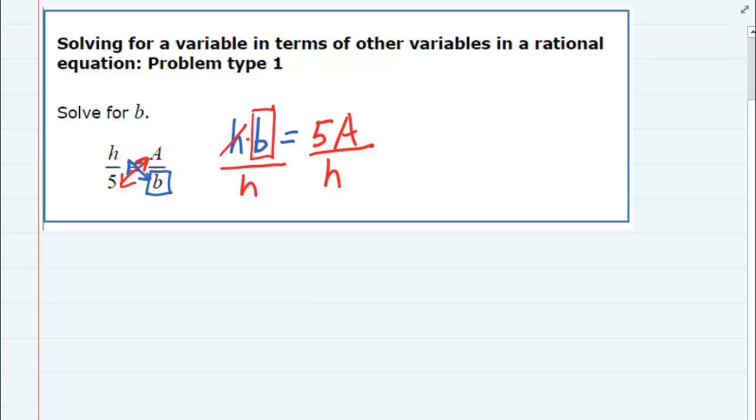On the left, the h's will then cancel, leaving me with just the b. And on the right, I have that fraction of 5a over h. And since that won't simplify, we will stop there.